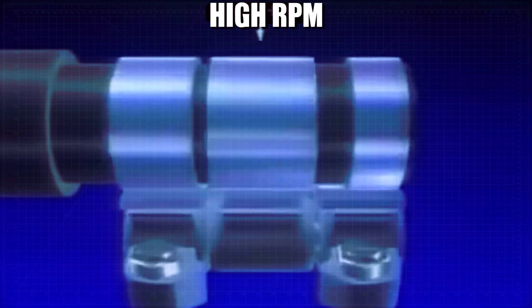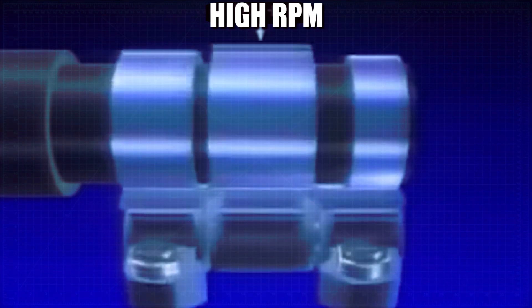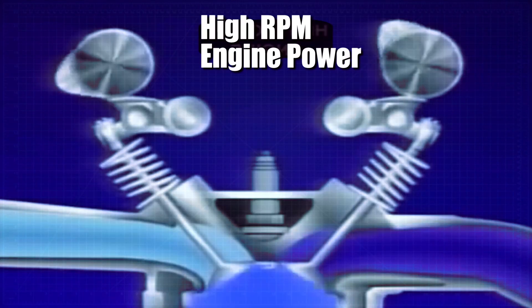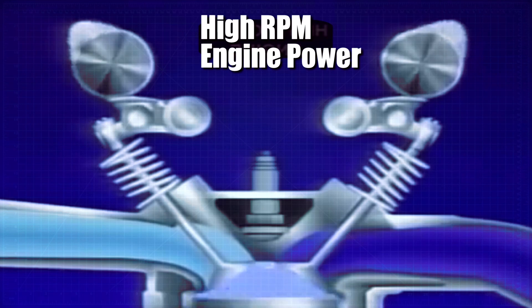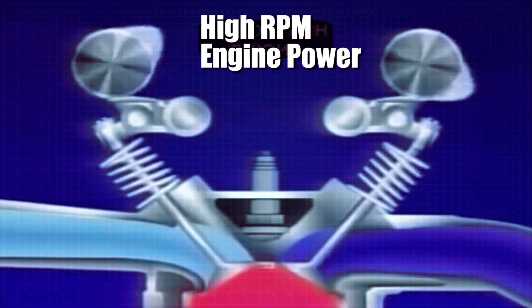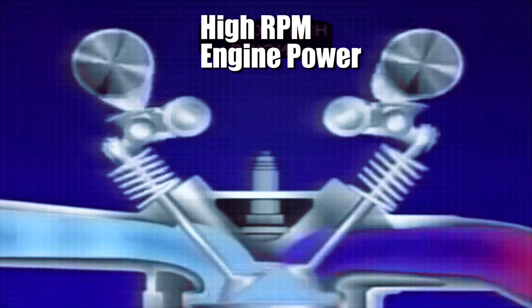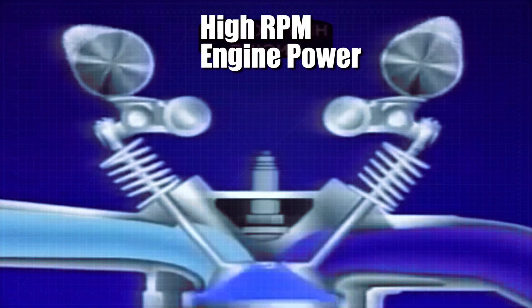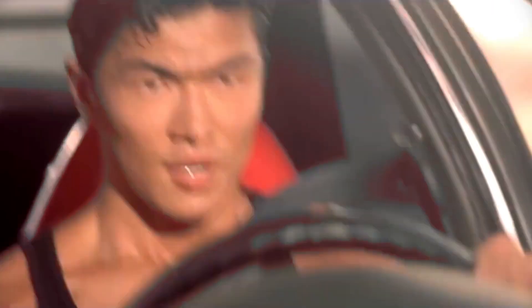And since the center cam lobe causing the middle rocker arm to move up and down is larger than the two other lobes, it's now forcing the valves to open sooner, close later, and increase valve lift according to the center cam lobe profile. This action allows the engine to breathe more effectively at higher engine revs and increase performance. Not to mention, VTEC!